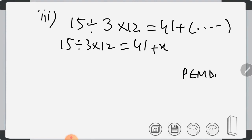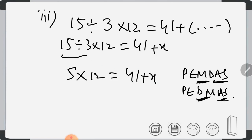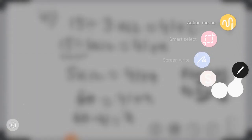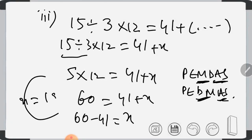You must know that with PEMDAS, division and multiplication run parallel, and addition and subtraction also run parallel. 15 divided by 3 is 5, times 12 equals 60, which equals 41 plus X. So X equals 19.